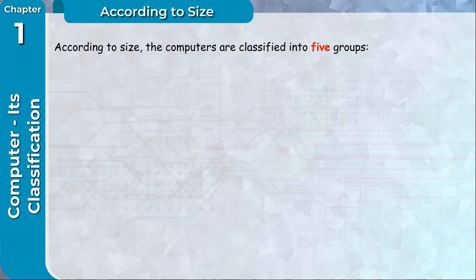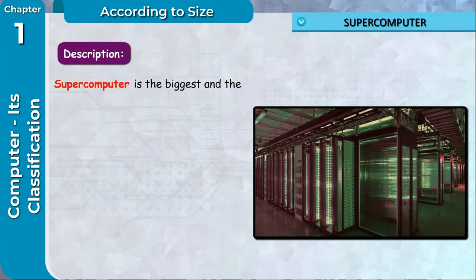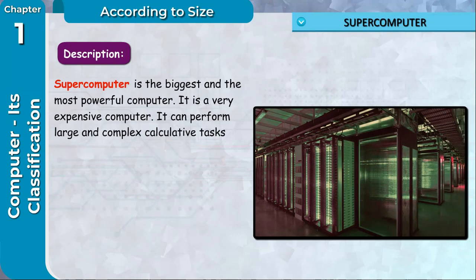According to size, the computers are classified into five groups. Supercomputer Description: Supercomputer is the biggest and the most powerful computer. It is a very expensive computer. It can perform large and complex calculative tasks at a very high speed.